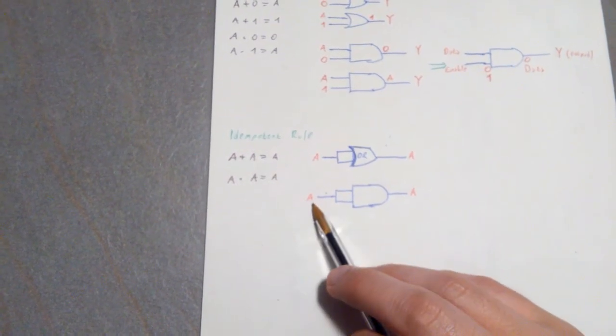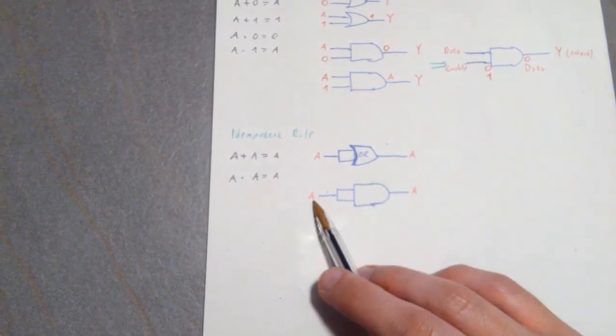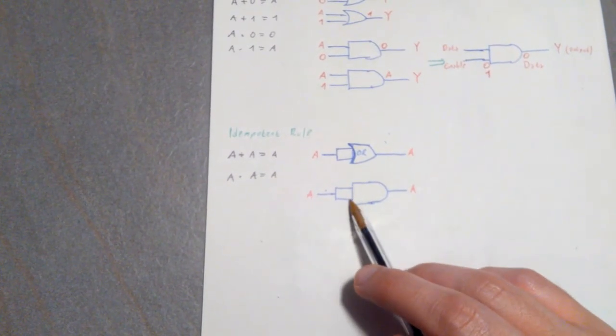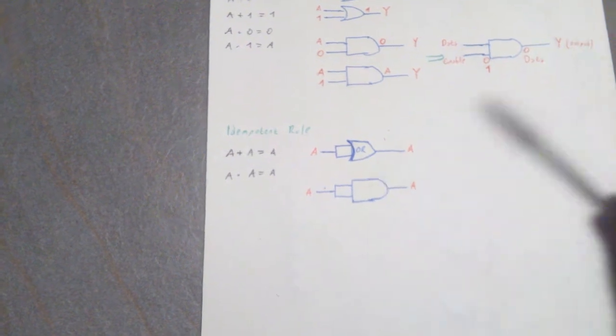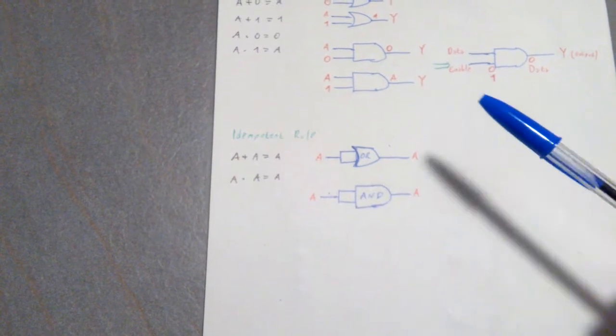Because if A is 0, then you're going to have 0, 0, the output is 0. If you have A as 1, then you're going to have 1, 1, the output is 1. So this is pretty easy, this is just the idempotent rule.